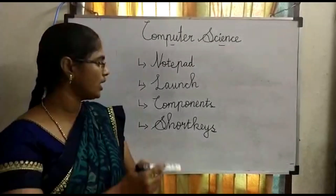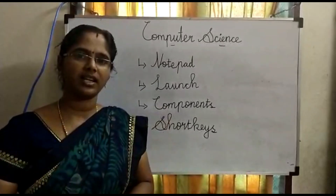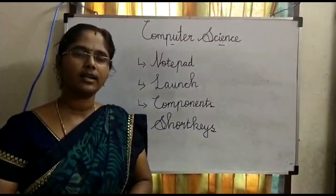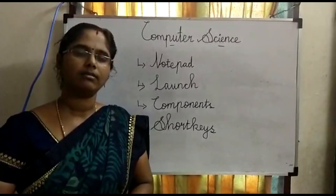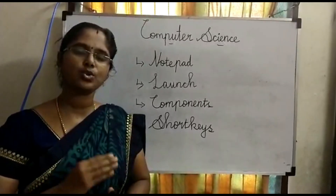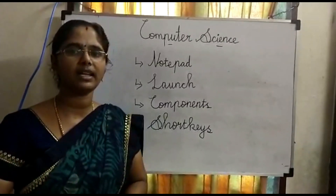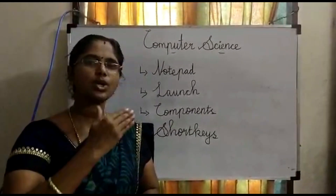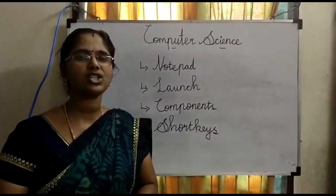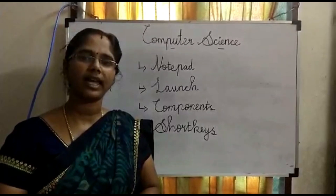The next topic is the components of Notepad. On the first Notepad screen, the first bar is called the Title Bar. The Title Bar holds the name of the application and file name, the symbol of the application on the left side, and to the right side you can see the Minimize, Maximize or Restore, and Close buttons. Just below the Title Bar we have the Menu Bar. Each menu contains a number of menu options along with shortcut keys.